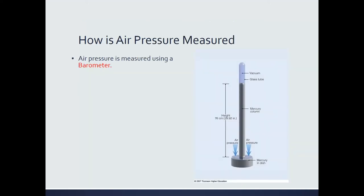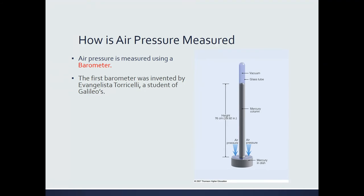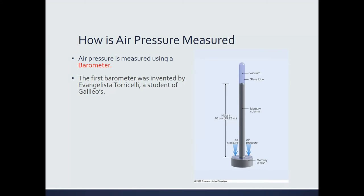Air pressure is measured using a tool called a barometer. The first barometer was invented about 400 years ago by a gentleman named Evangelista Torricelli. Torricelli was a disciple — a minion, not like the little guys, but a minion — of Galileo. I'm sure you all know who Galileo is: very important in astronomy, very important in science in general. A student that Galileo mentored went on to invent the barometer.